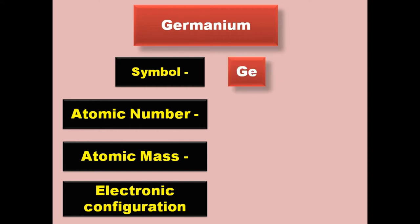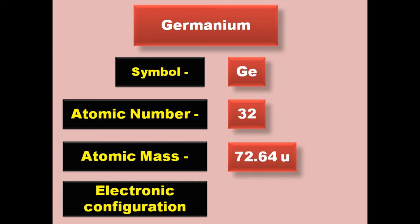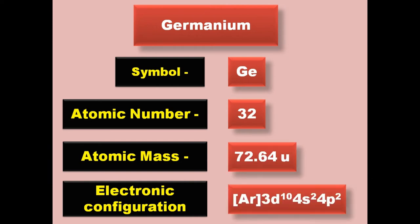Germanium has symbol Ge, atomic number 32, atomic mass 72.64, electronic configuration [Ar] 3d10 4s2 4p2. Germanium is a metalloid and exists in solid form at room temperature.